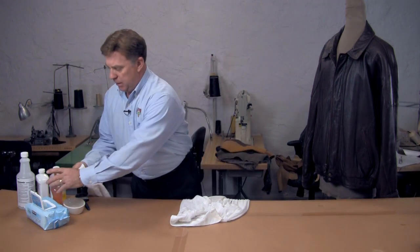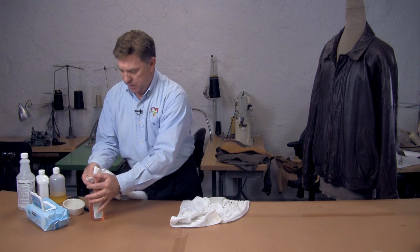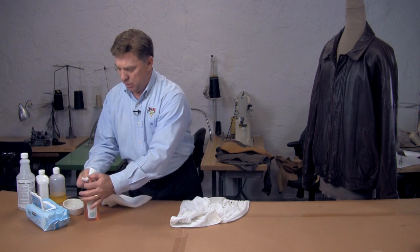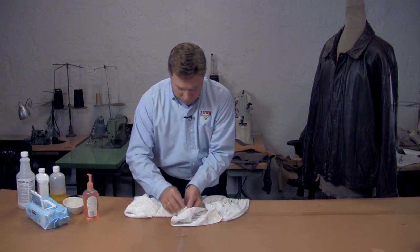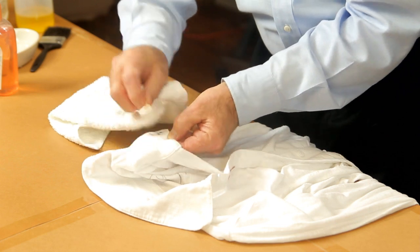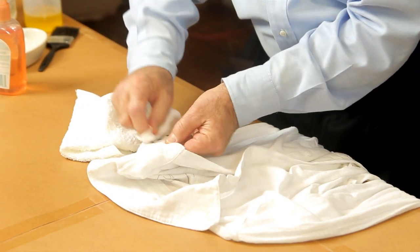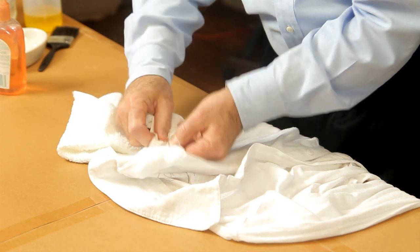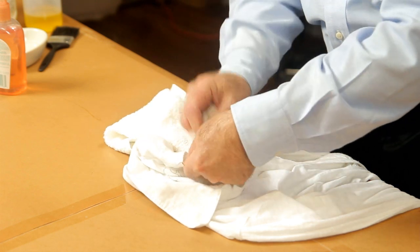A little bit of detergent and water on a cloth. The detergent will lubricate the stain and help to remove it. And again, we're just going to blot this out and transfer some of it to the cloth. You can tell that I'm not rubbing but just rather blotting.